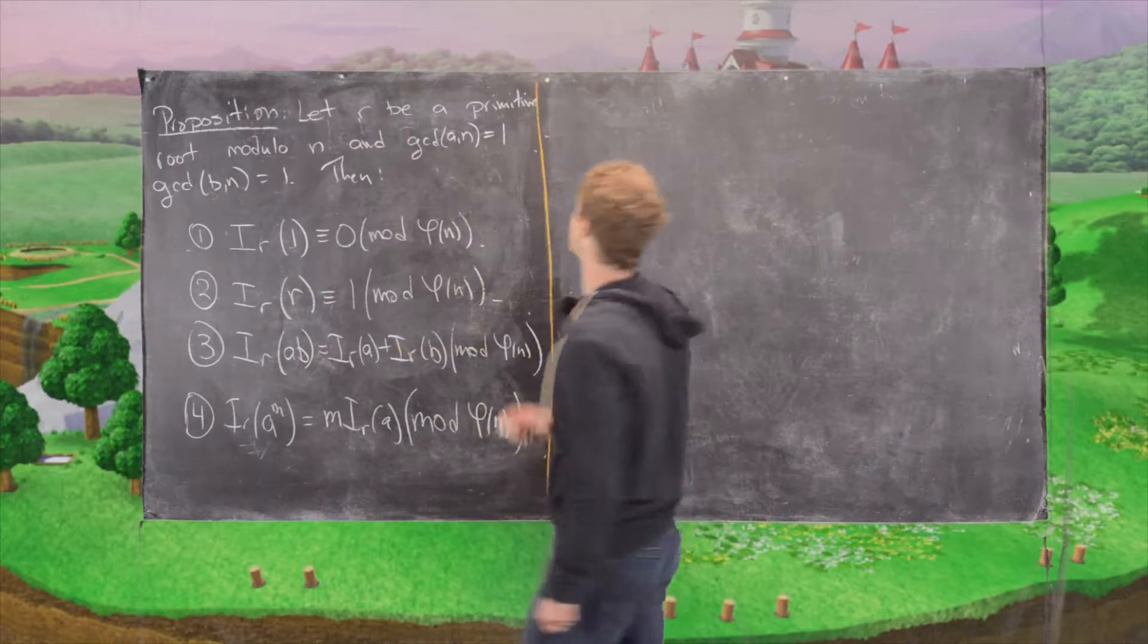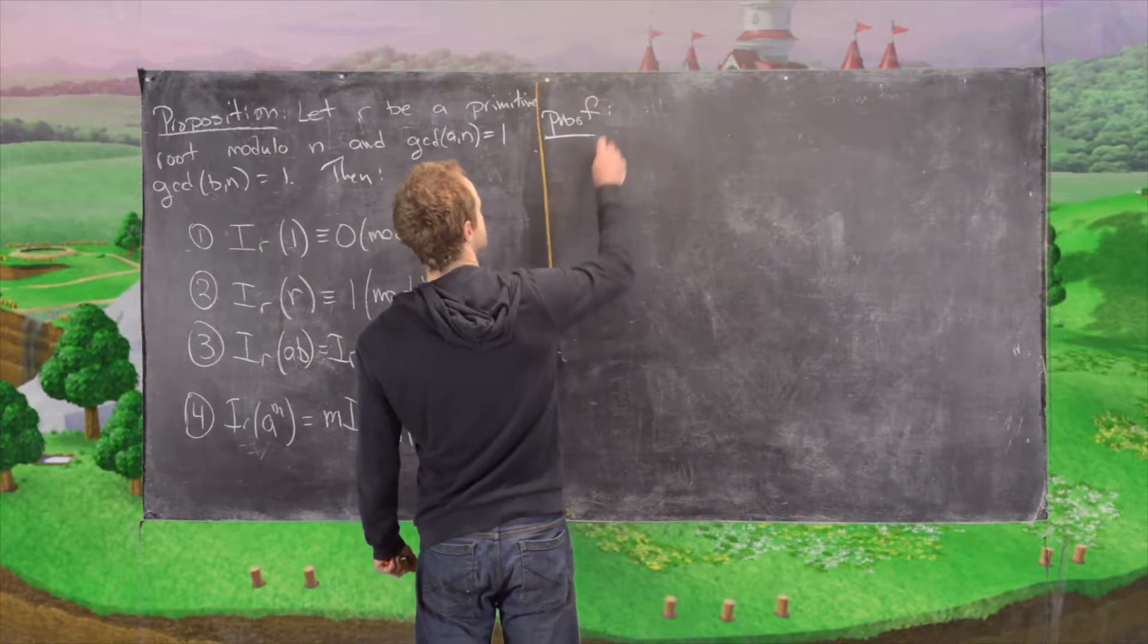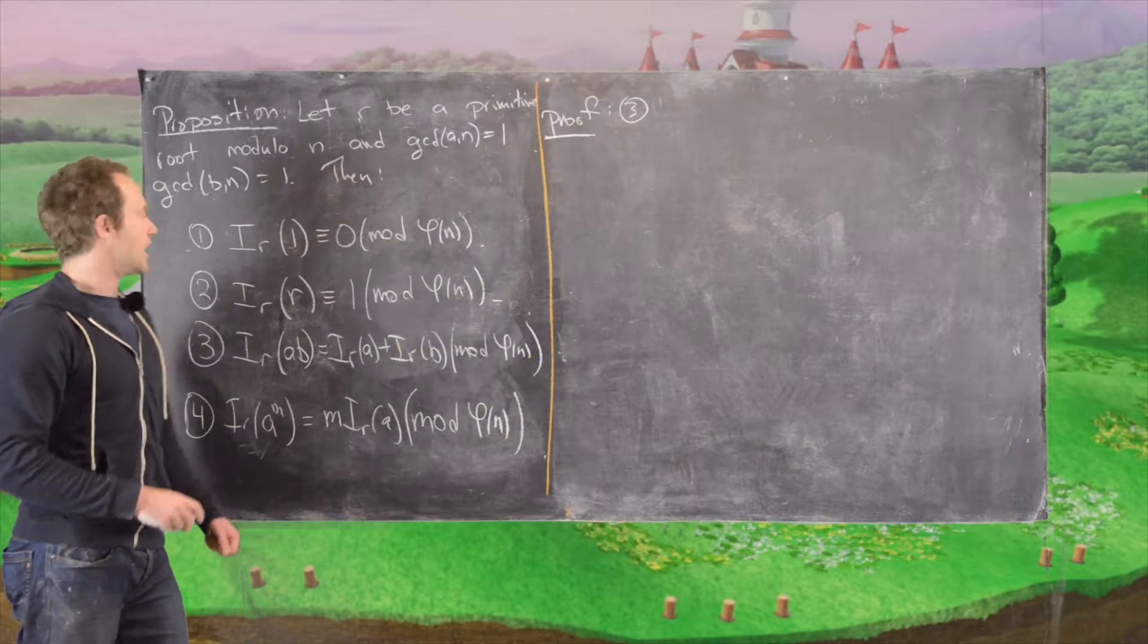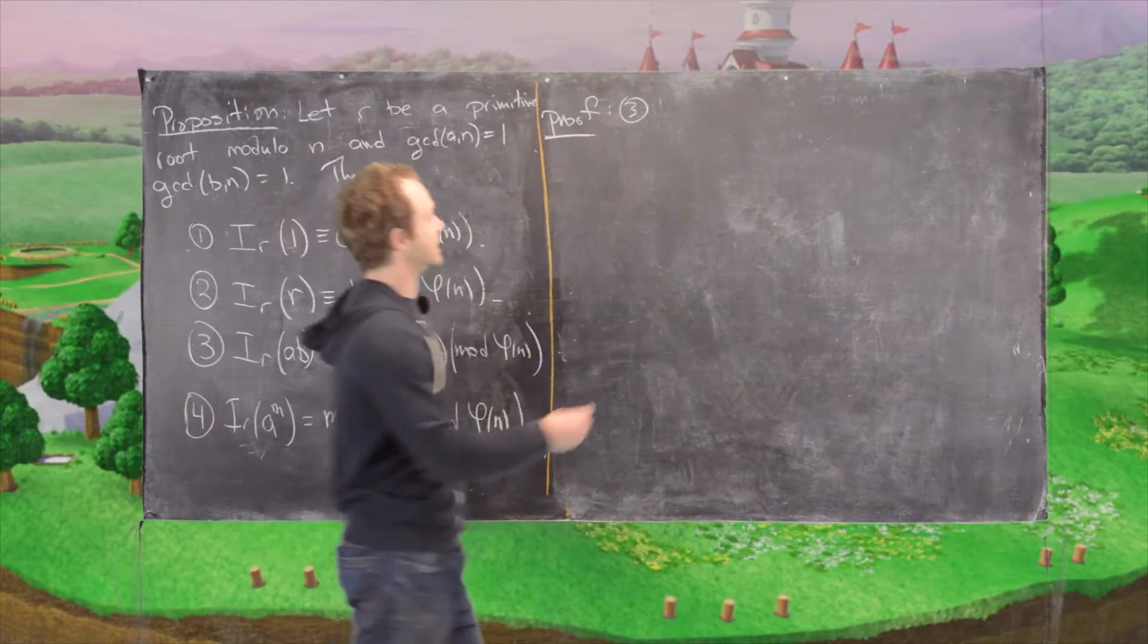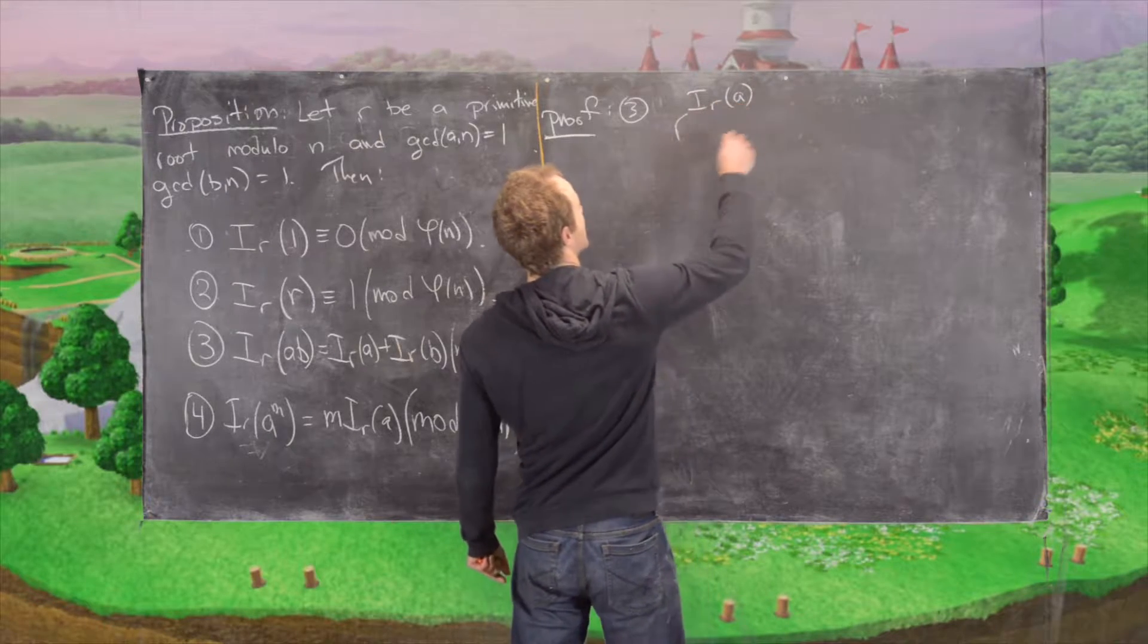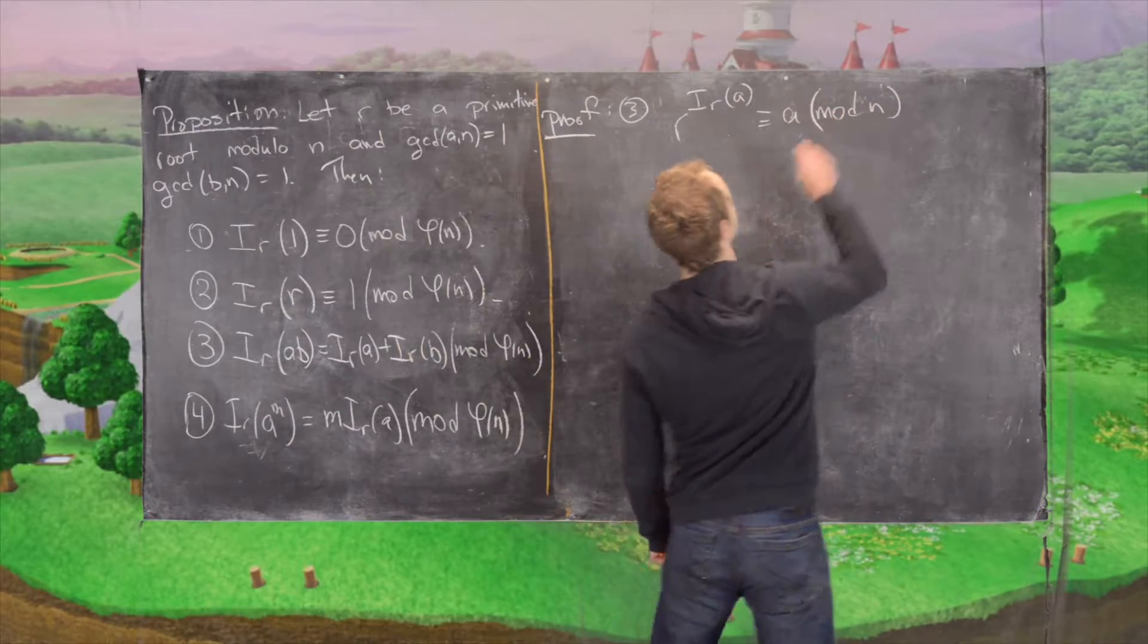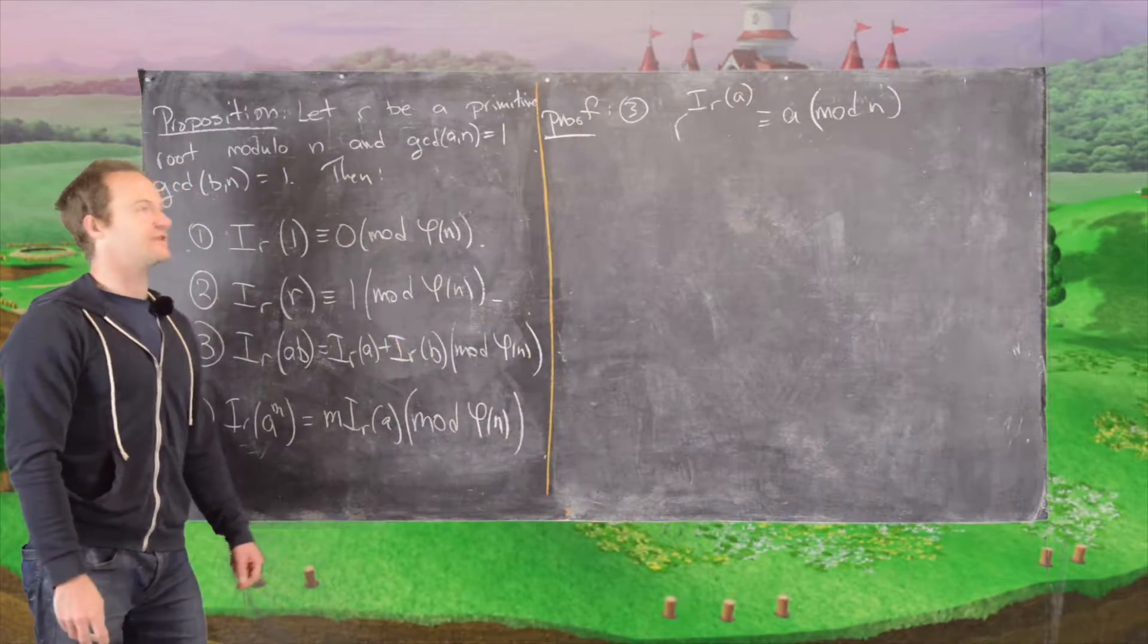So let's get on with the proof. We'll start with number three because we just talked through number one and two. Let's notice that r to the index sub r of a is congruent to a modulo n. That's the definition of the index, an exponentiation logarithm inverse relationship.